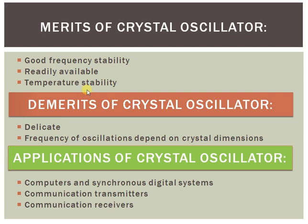Coming to the demerits: crystals are very delicate and require careful handling. Since the thickness of the crystal is inversely proportional to frequency, at high frequencies crystals will be thinner and mechanically weak. Also, the frequency of the crystal depends upon its dimensions and cut, so for a new frequency of oscillation the crystal needs to be redesigned and replaced. Regarding applications: crystal oscillators are used in computers and synchronous digital systems to generate the clock signal, in communication transmitters to generate the carrier frequency, and in communication receivers to generate the local oscillator frequency.